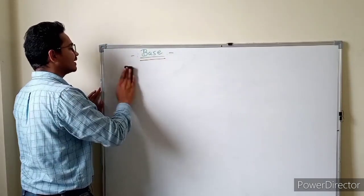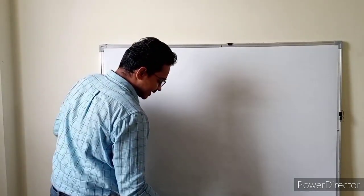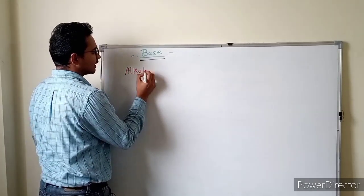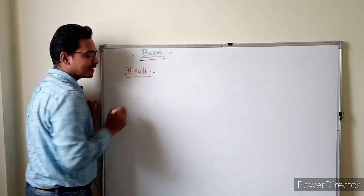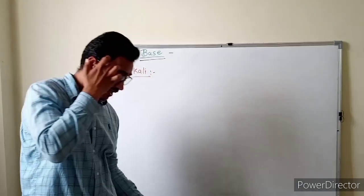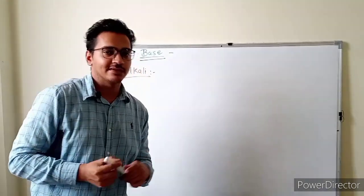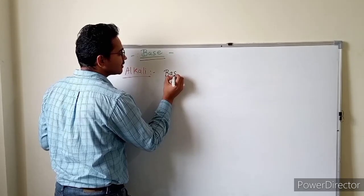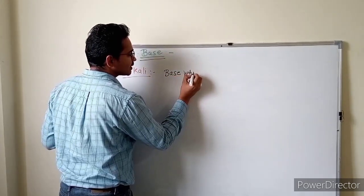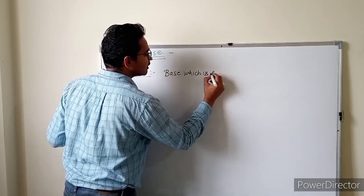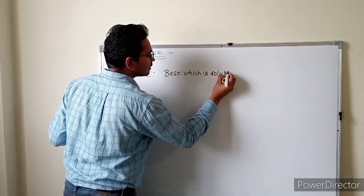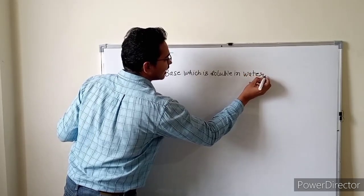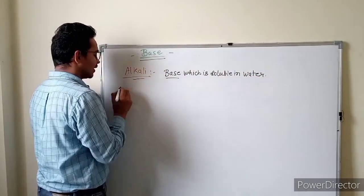After this we study alkali. Many people get confused between base and alkali. There are also GPSC questions related to this. Alkali is defined as a base which is soluble in water. So bases that dissolve in water are called alkali — that is the difference between base and alkali.